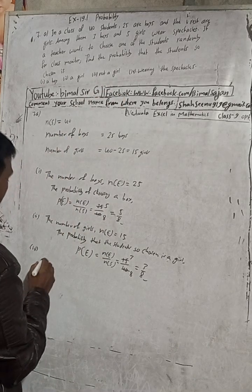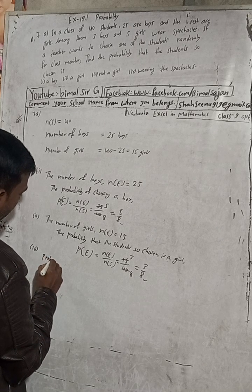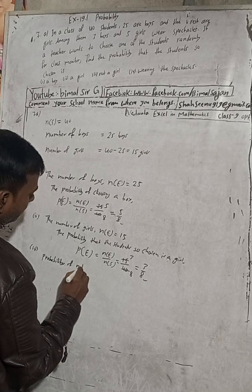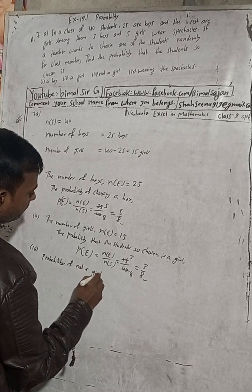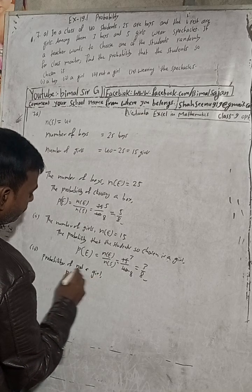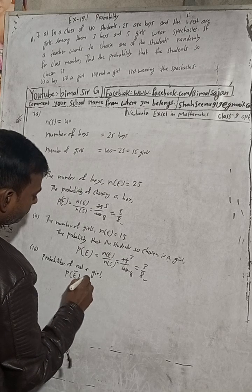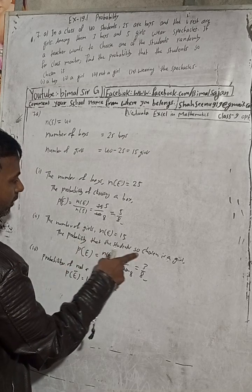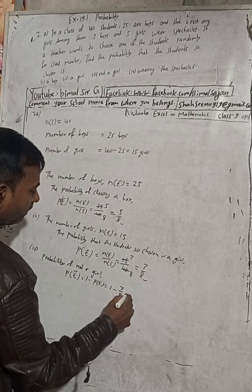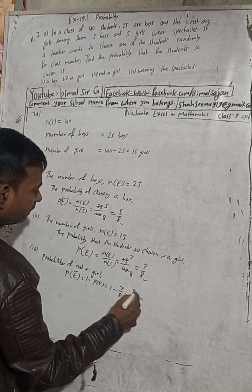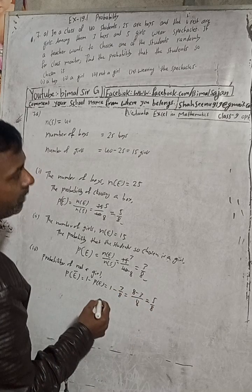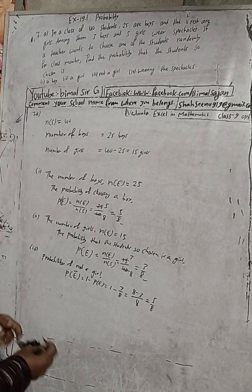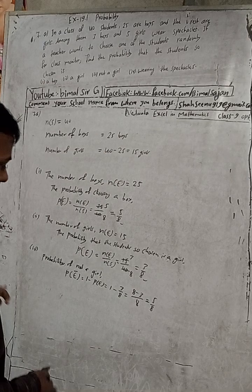Now part (c): the probability of NOT choosing a girl. P(not a girl) equals 1 minus P(girl). We found P(girl) is 3/8, so this is 1 minus 3/8, which equals 8/8 minus 3/8, giving us 5/8. So the answer is 5/8.